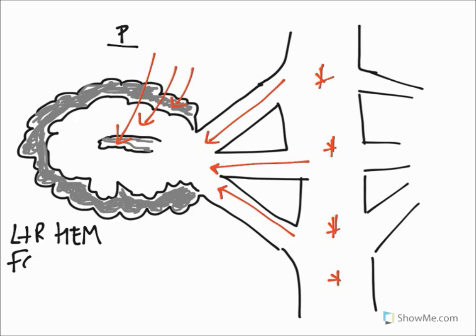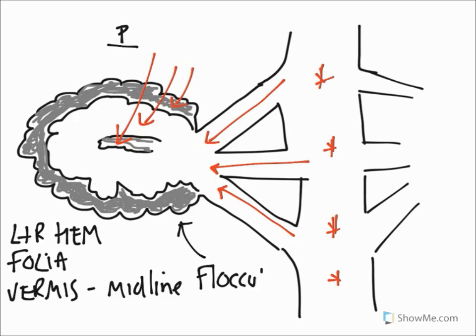These are called folia. We have a midline structure known as the vermis and we really cannot see that here but it's on the midline. We also have a structure in here which is called the flocculus and that's quite close to some of these structures here which connect to the cerebellum.